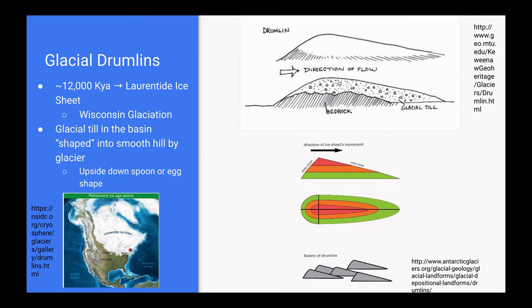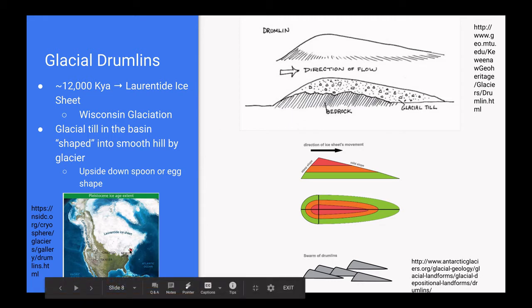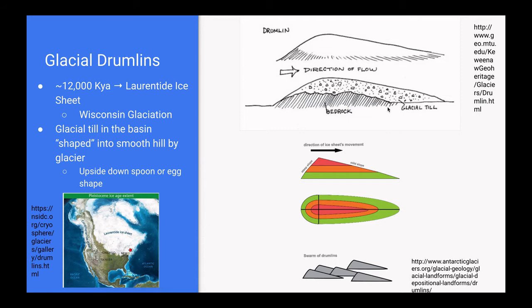Next we'll take a look at the glacial processes responsible for creating the Boston Harbor Islands. Roughly 12,000 years ago, the Laurentide Ice Sheet traveled over the Boston area. Before this happened, there were already piles of unshaped glacial till around Boston that had been left there by previous glacial events, and all of these unshaped mounds of glacial till already sat above the bedrock. When the Laurentide Ice Sheet traveled over these mounds of glacial till, the pressure from the thick ice sheet essentially shaped them into streamlined, rounded, and elongated hills known as glacial drumlins.